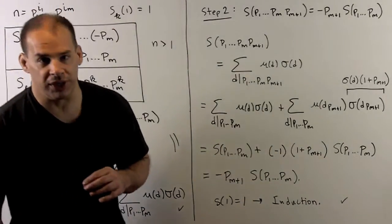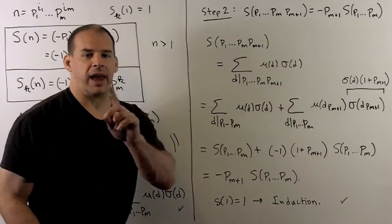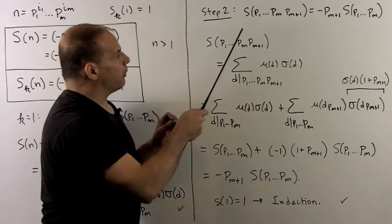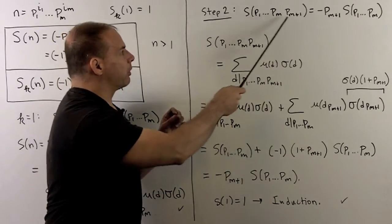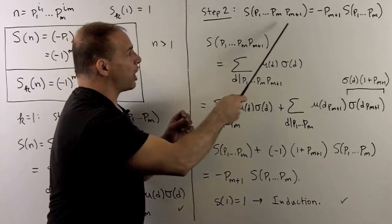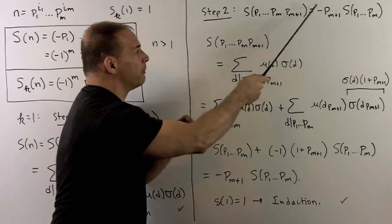That we'll be able to do using induction. We know that S of 1 is equal to 1. So for the induction step, what I want to show is we have a product of primes, they're distinct. I want to show that I can peel one of those off just by multiplying out in front with a minus sign.